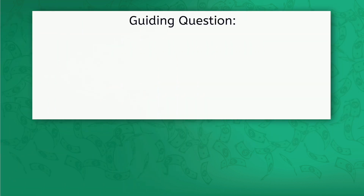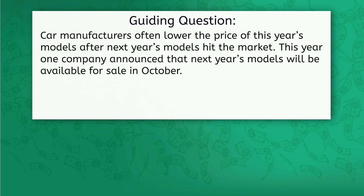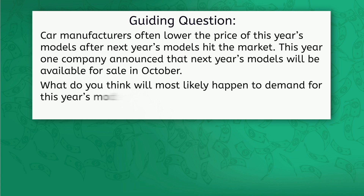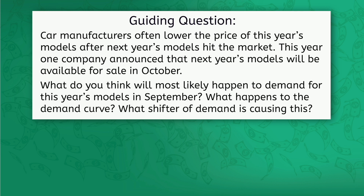Take a moment to practice this for yourself. Car manufacturers often lower the price of this year's models after next year's models hit the market. This year, one company announced that next year's models will be available for sale in October. What do you think will most likely happen to demand for this year's models in September? What happens to the demand curve? What shifter of demand is causing this?